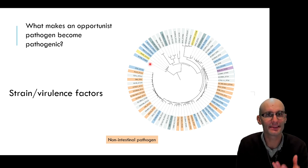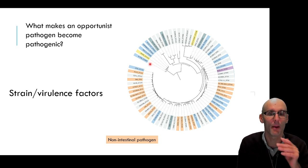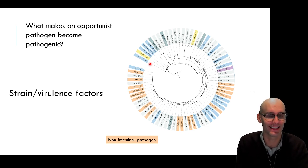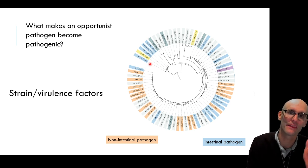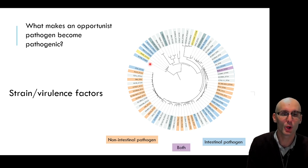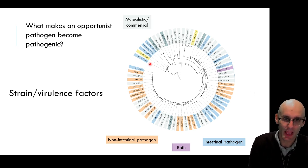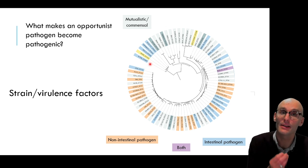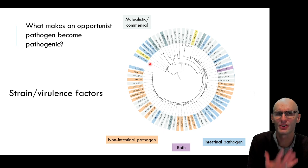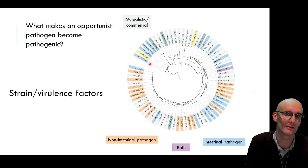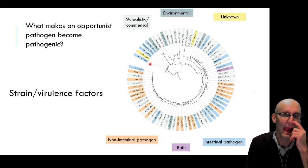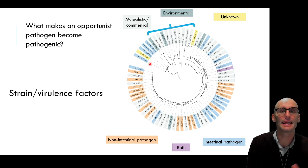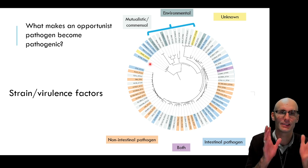They've been color coded. In orange we have strains that typically cause non-intestinal disease like urinary tract infections. In blue we have an intestinal pathogen like diarrhea, E. coli that are often associated with causing diarrhea. In purple we have both, they can be associated with an intestinal disease or a skin disease or a urinary tract infection. In grey we have strains that are more commonly associated with benefiting the patient, producing vitamin K, not causing disease, the mutualistic or commensal bacteria. In dark grey we have environmental bacteria, normally found in the environment, not in humans. And in yellow we have unknown.